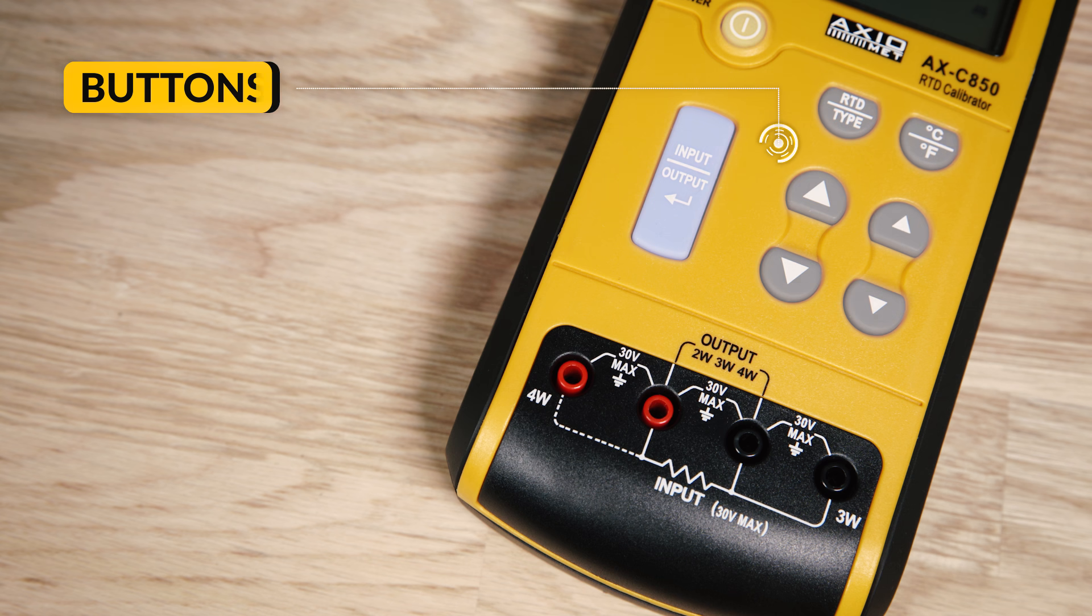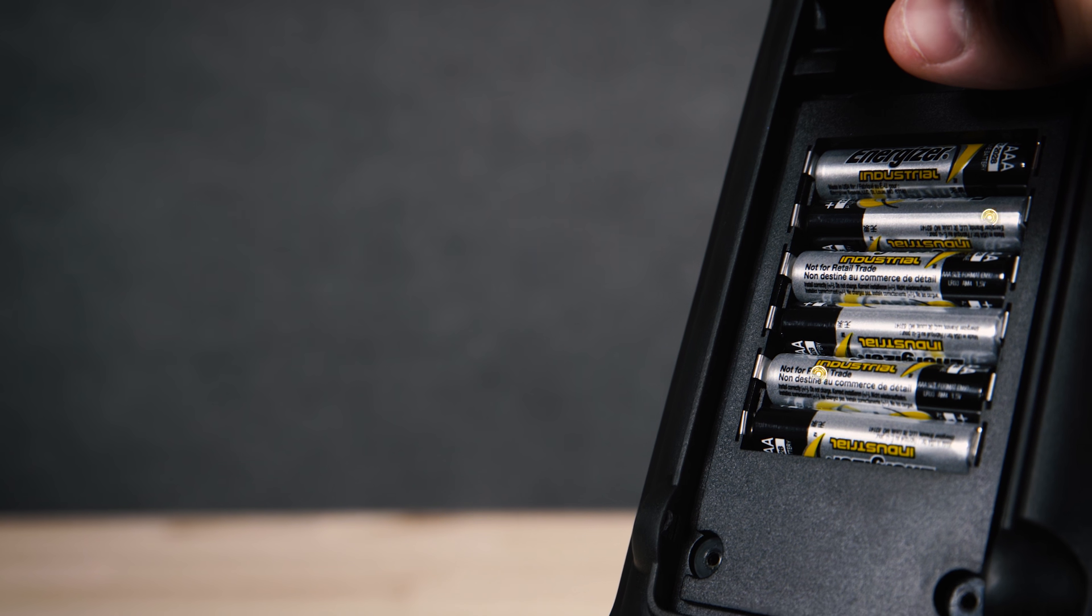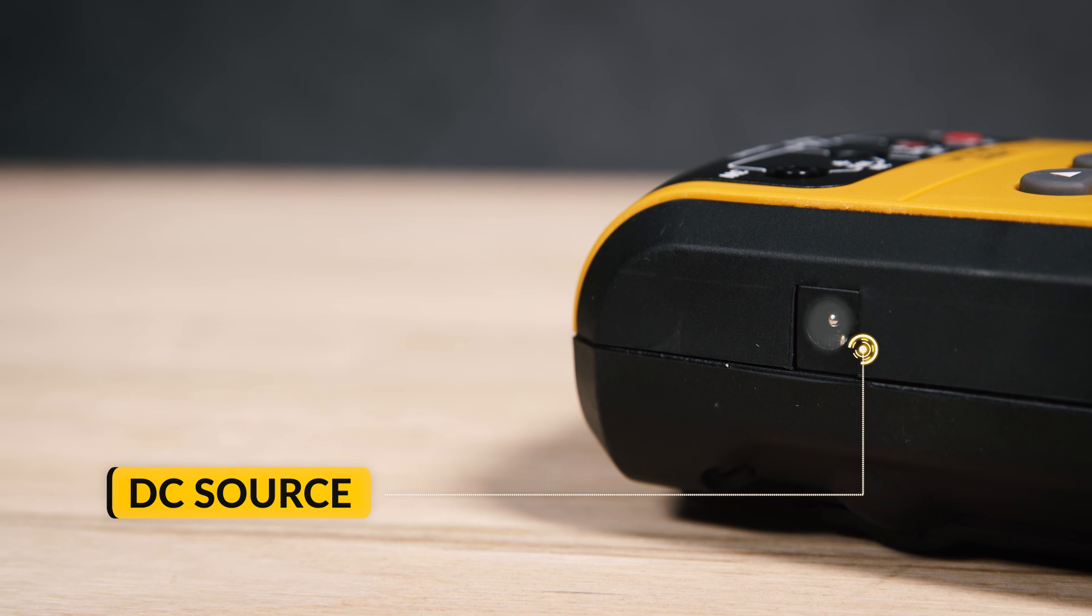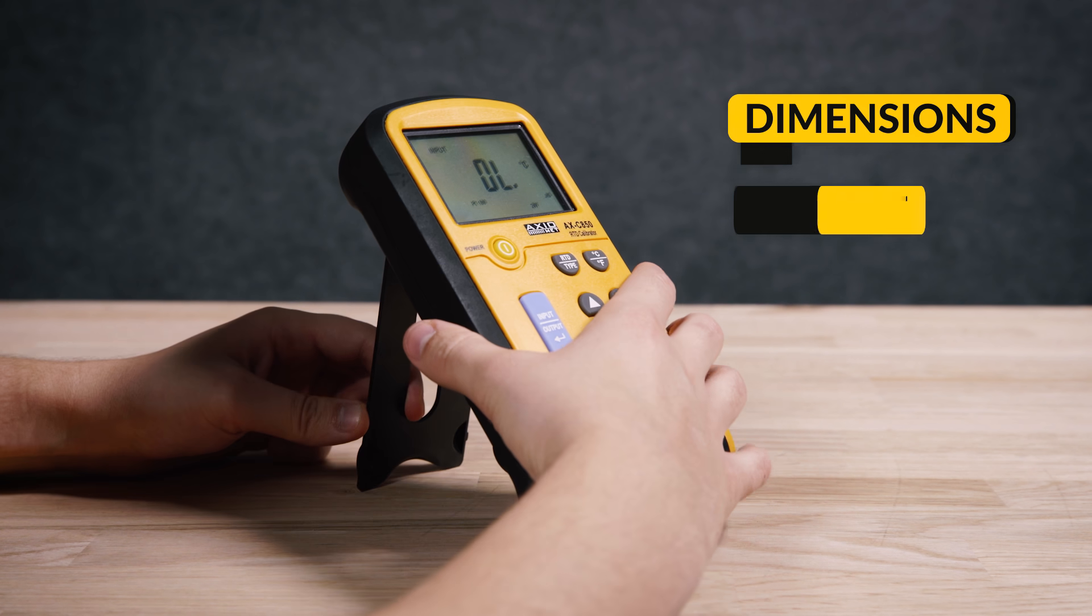power and function buttons, and RTD input-output terminals. The AXC850 can be powered by six AAA batteries or 12V DC source. It can also be put on a stand for higher convenience.